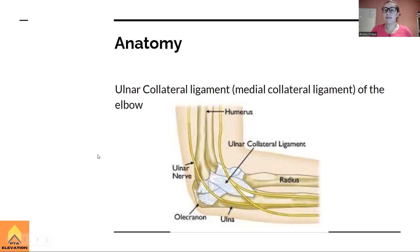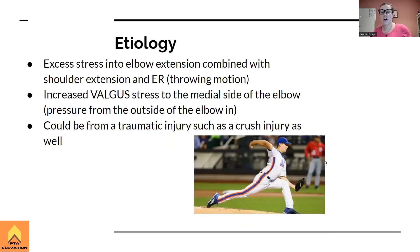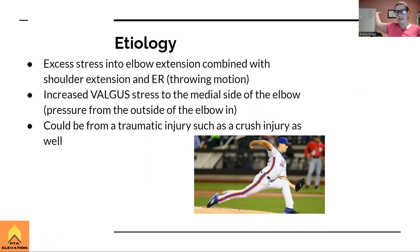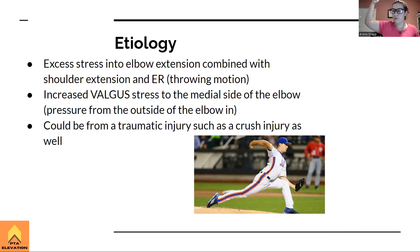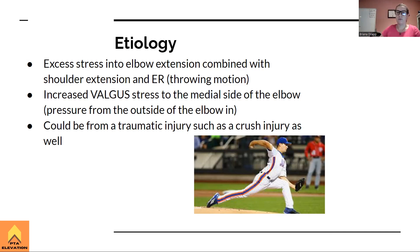This is something that tends to cause a lot of problems in throwers. The etiology of a UCL sprain is excess stress on the elbow into extension and then into flexion — that throwing motion. This creates an increased valgus stress on the elbow, meaning force from the outside pushing in toward the medial side.